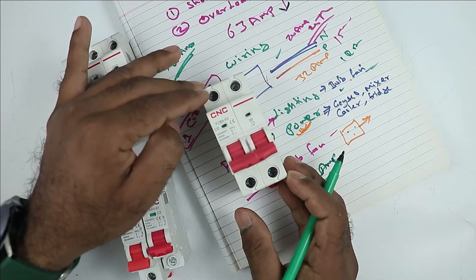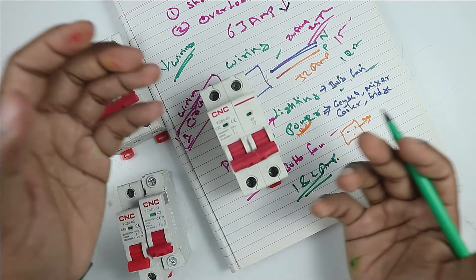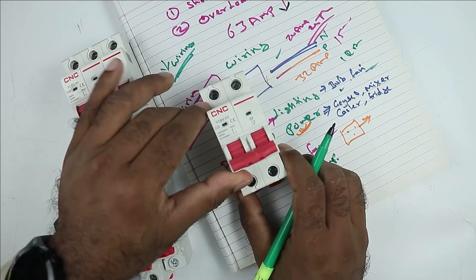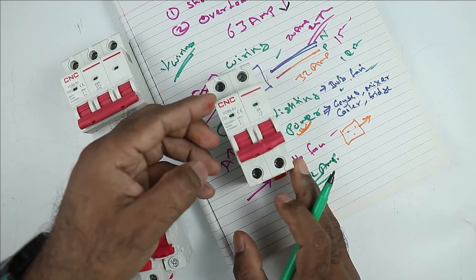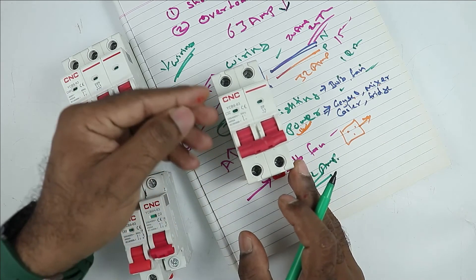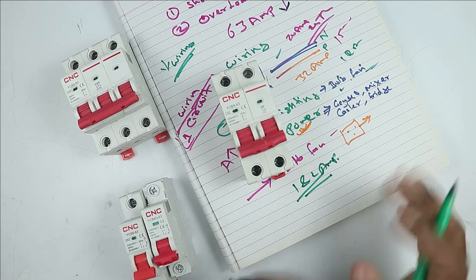For only 1 to 2 ampere current, if you install the MCB of 32 ampere, then how you are going to get protection? Your MCB will not trip till the current flowing through the MCB goes beyond 32 ampere.